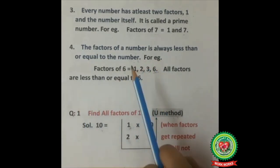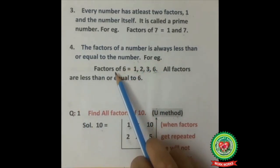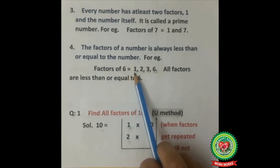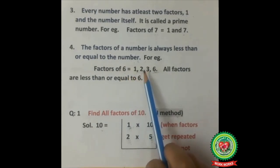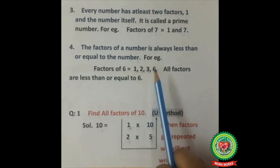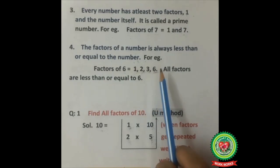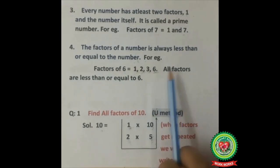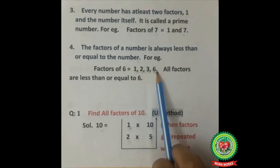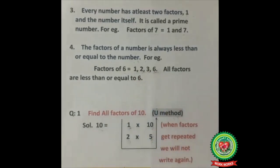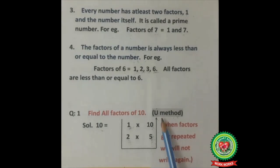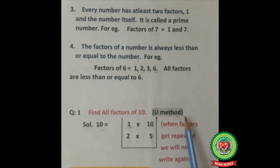Let's see one example. Factors of 6 are equal to 1, 2, 3, and 6. So all factors are less than or equal to 6. Now we will learn to find all factors of a number using the U-method, and you will learn what the U-method is.